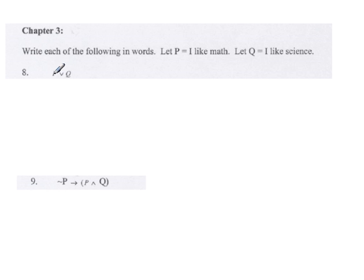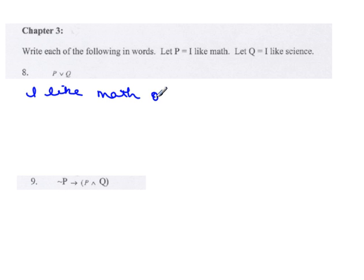So whatever P is, I'm going to write 'I like math'. A disjunction — which is what that symbol is — is the word 'or'. So I'm going to write the word 'or'. And then Q is 'I like science'.